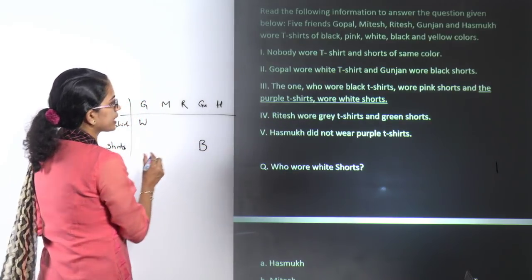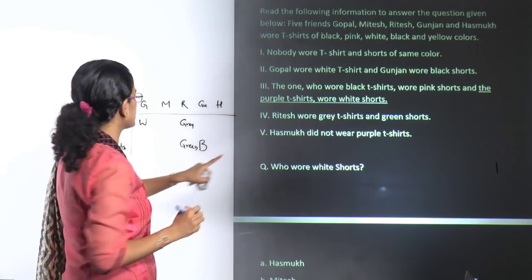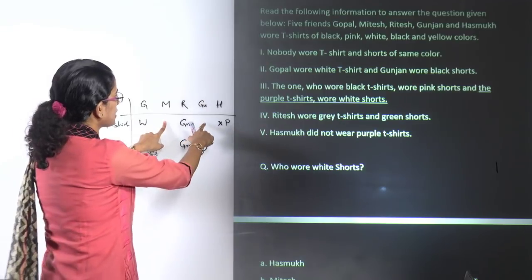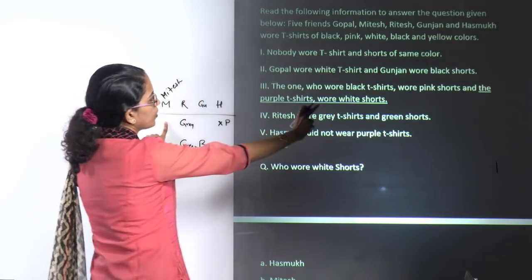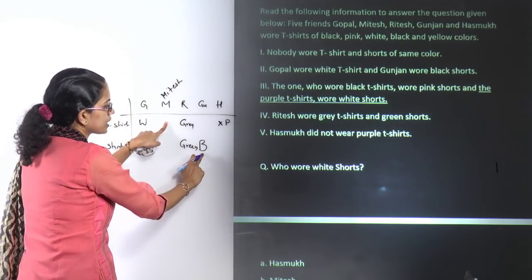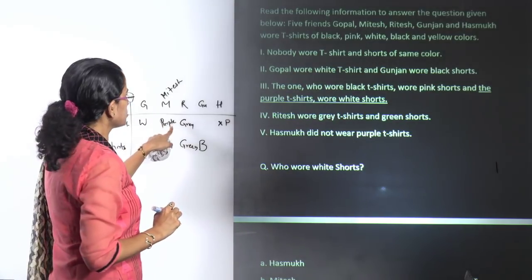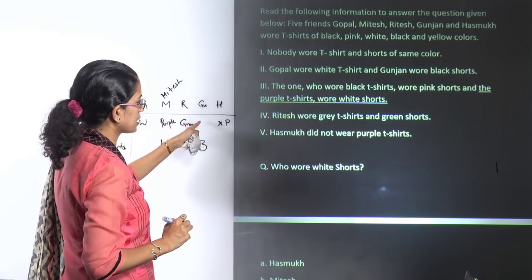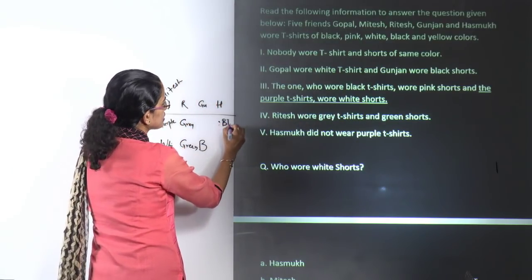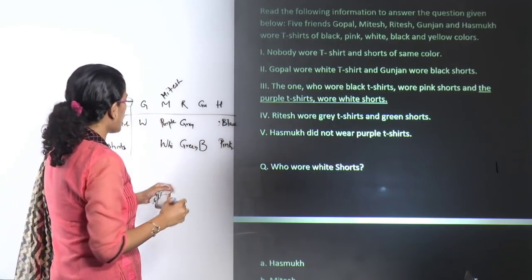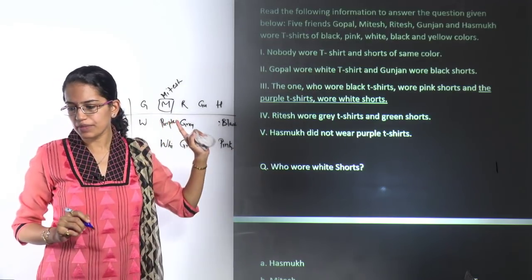Hasmuk does not wear a purple t-shirt, so only Gunjan or Mitesh can wear purple. The person wearing purple must wear white shorts, but Gunjan is wearing black shorts. So Mitesh must be wearing white shorts and a purple t-shirt. Gunjan wears black t-shirts and pink shorts. So the one who wears white shorts is Mitesh — that's the correct answer.